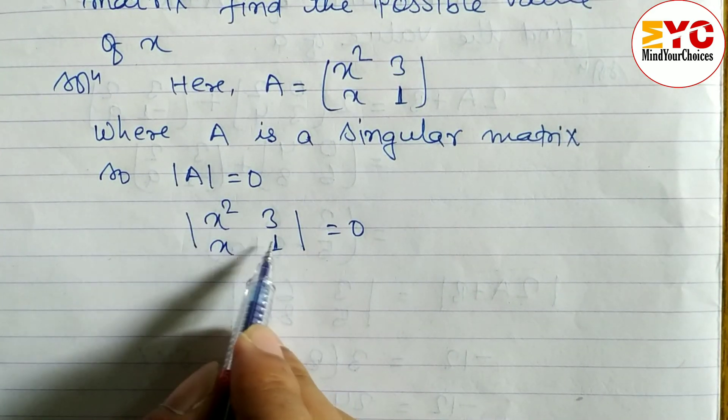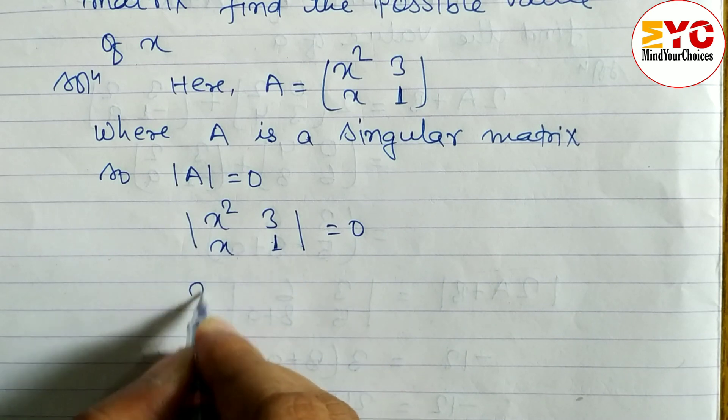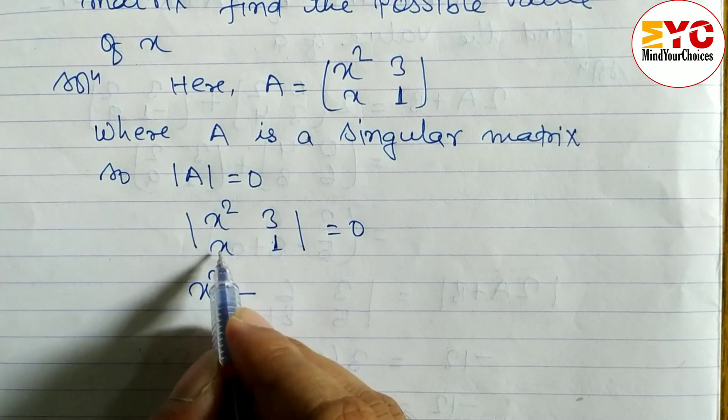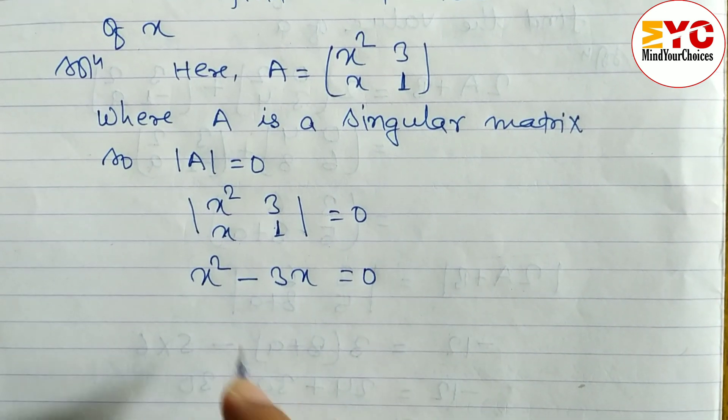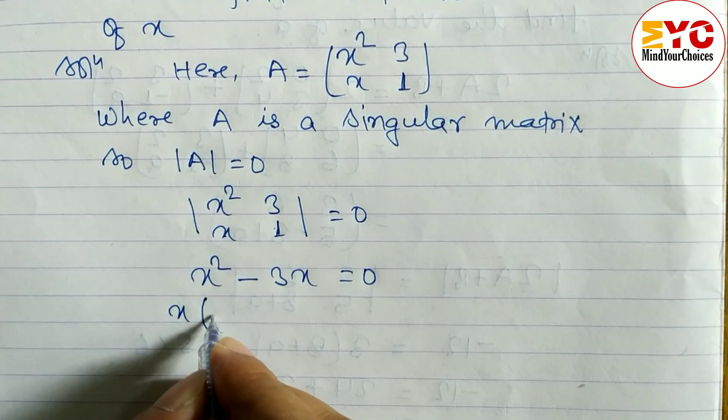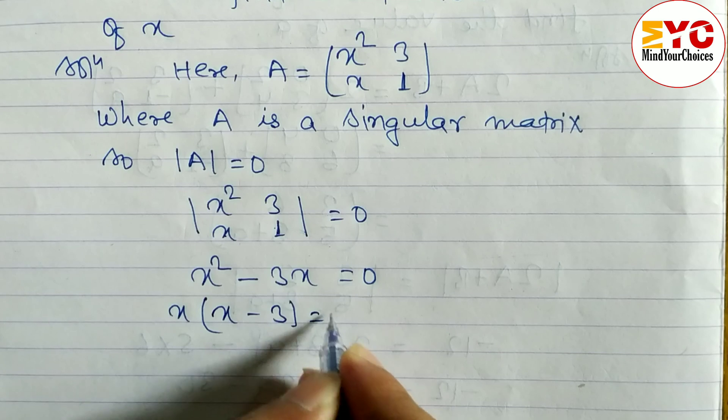We multiply the main diagonal: x² into 1, we get x², minus x into 3, we get 3x, equals 0. After this we can take x common: x(x - 3) equals 0.